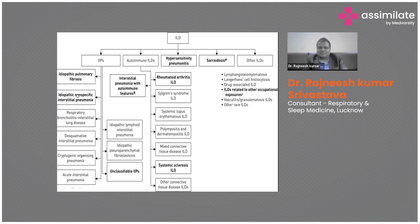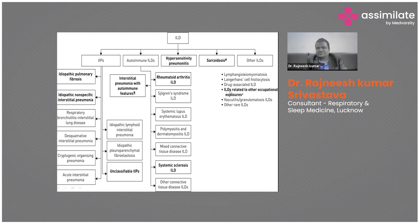In non-IPF, there are diseases like non-specific interstitial pneumonia (NSIP), respiratory bronchiolitis interstitial lung disease (RBILD), desquamative interstitial pneumonia (DIP), cryptogenic organizing pneumonia, and acute interstitial pneumonia. Autoimmune diseases such as rheumatoid arthritis, Sjögren's syndrome, SLE, polymyositis, and dermatomyositis can all cause ILD. Sarcoidosis, hypersensitivity pneumonitis, and drug-induced or occupational ILDs are also included.